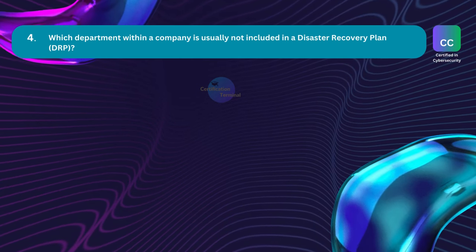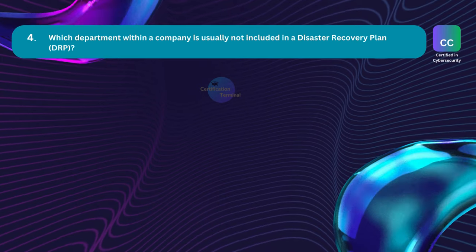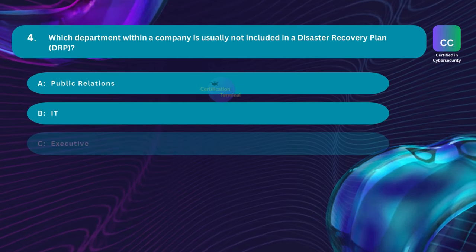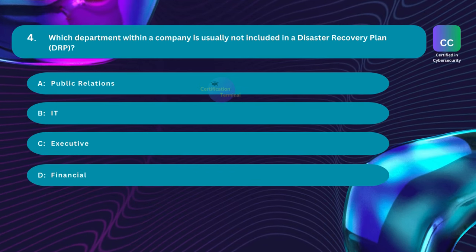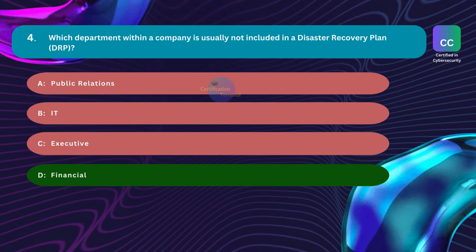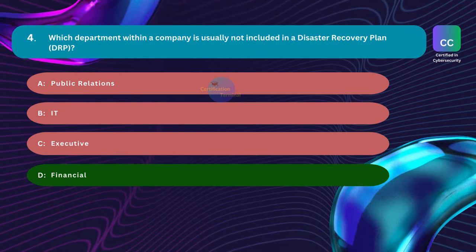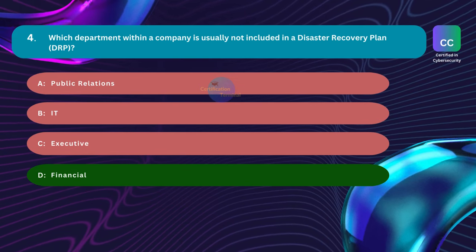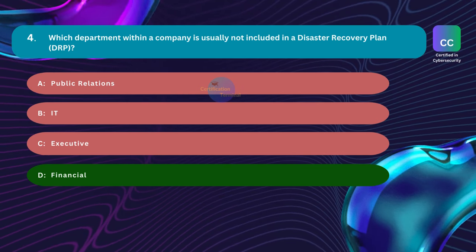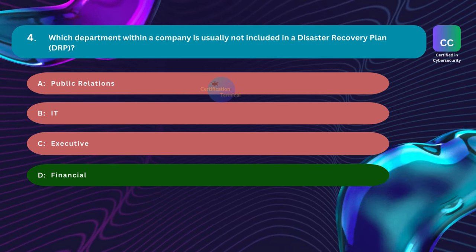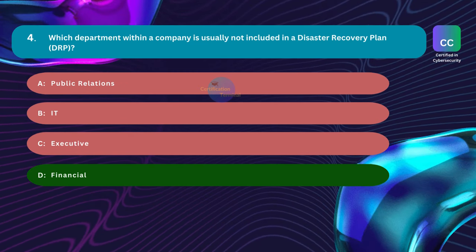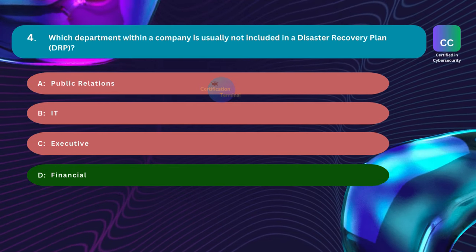Question number four: Which department within a company is usually not included in a disaster recovery plan? Option A: Public Relations. Option B: IT. Option C: Executive. Option D: Financial. The correct answer is Option D, Financial. Executives and Public Relations staff need awareness of the disaster recovery plan to handle communication and strategic decisions during a crisis. IT personnel are focused on the technical aspects of recovery. While the financial department may not always be directly involved, their role becomes crucial if the disaster has a direct connection to company finances.